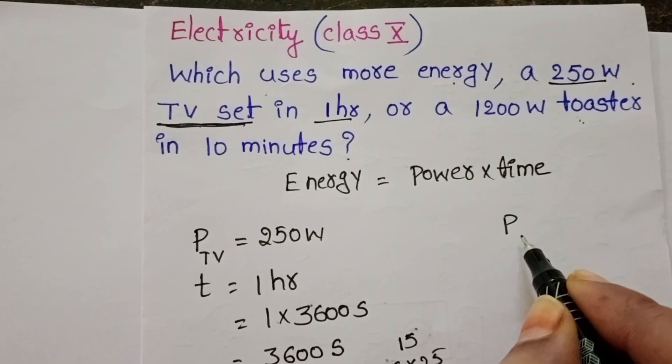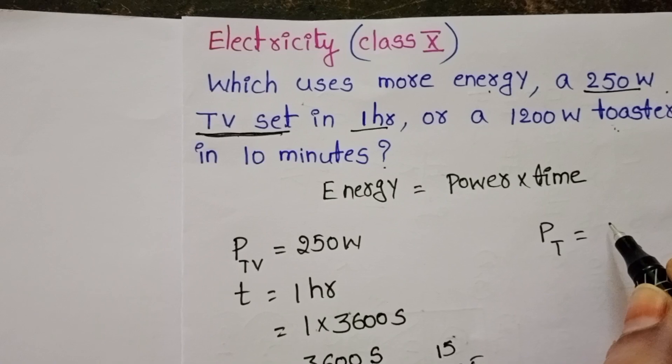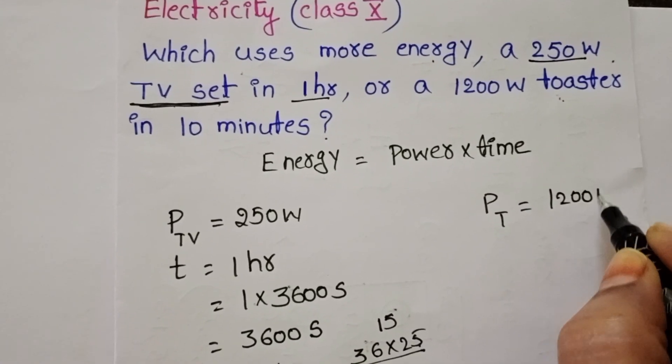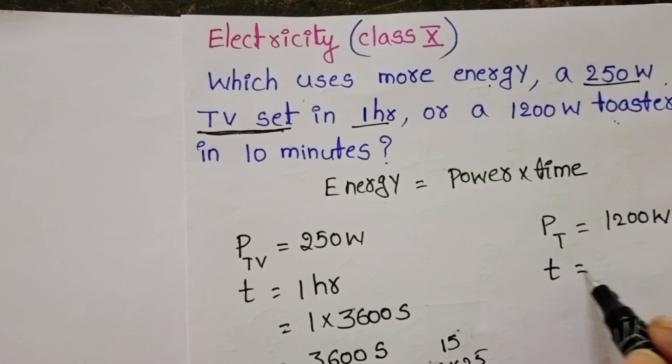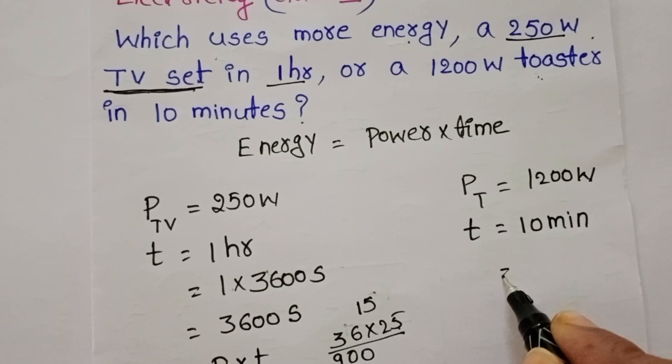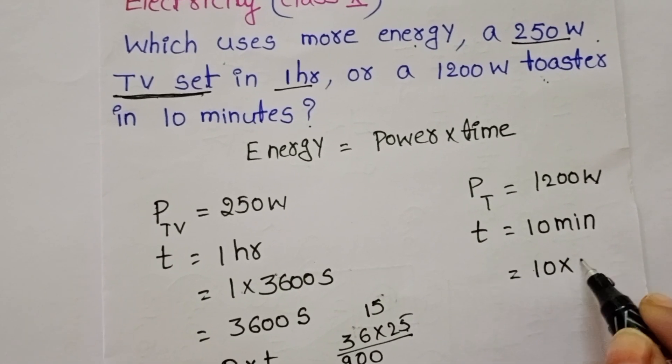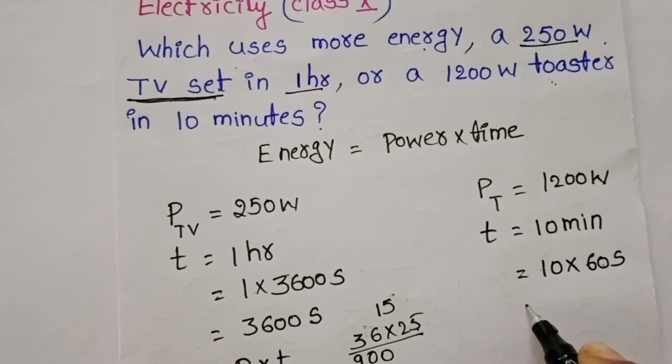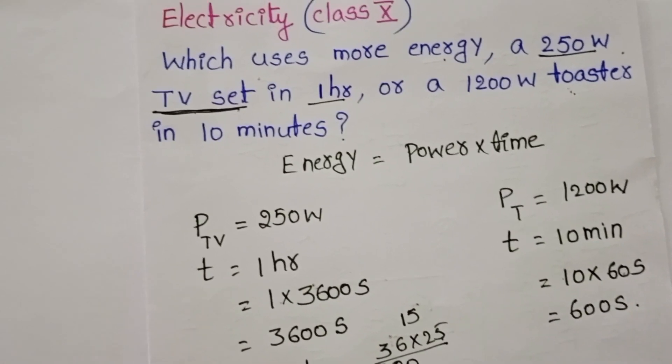Power of the toaster is 1200 Watt and time is 10 minutes. Convert into seconds: 1 minute equals 60 seconds, then it becomes 600 seconds.